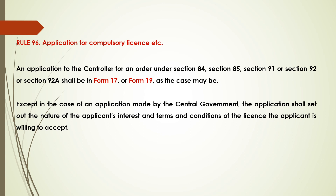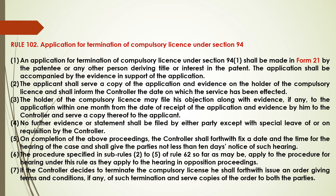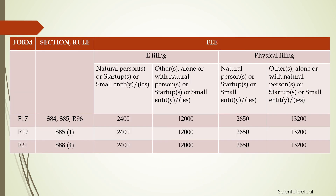The rule related to the application for compulsory license is Rule 96. It says that an application to the controller under Section 84, 85, 91, 92 or 92A shall be made in Form 17 or Form 19 as the case may be. The rule for termination of compulsory license under Section 94 is Rule 102, which states that an application for termination of compulsory license under Section 94(1) shall be made in Form 21 by the patentee or any other person deriving title or interest in the patent, and there shall be evidence in support of the application. The fee structure related to Forms 17, 19 and 21 is also provided.